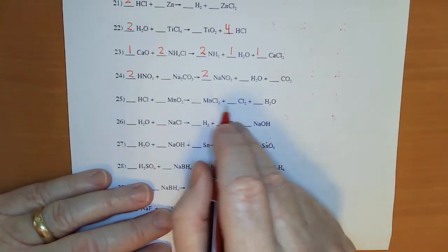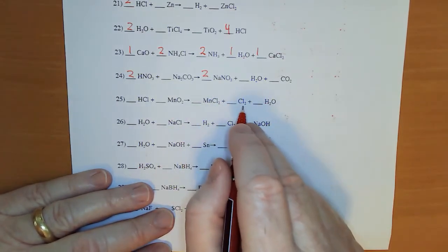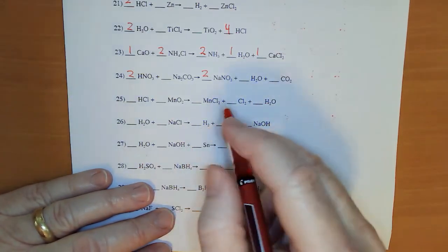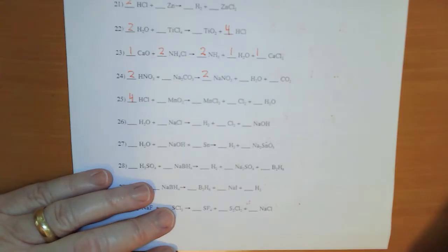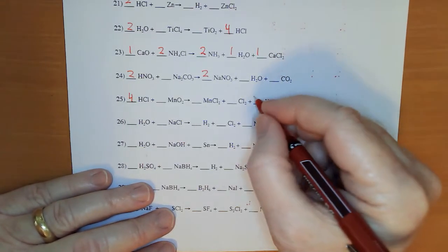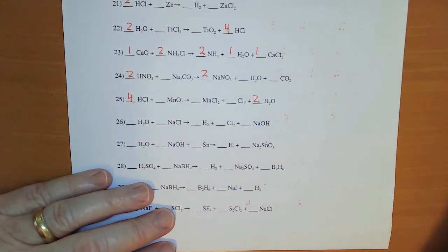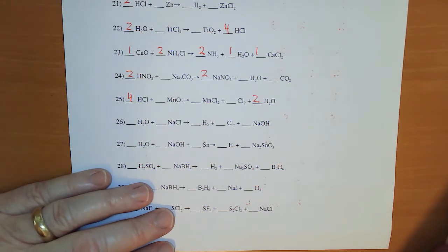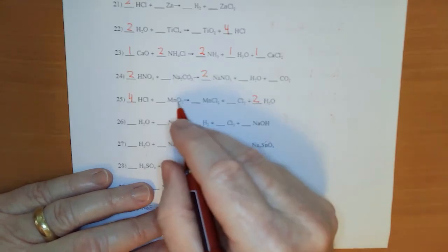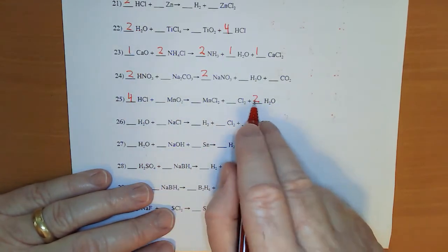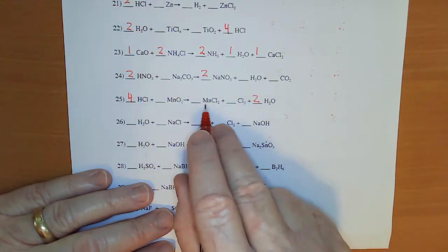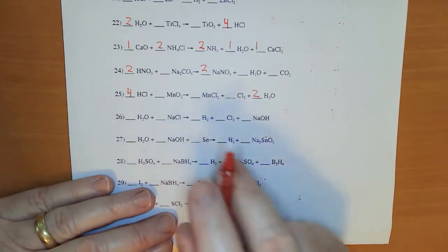Chlorine caught my attention because I've got it in 2 places — 2 of them and 2 of them, so that's 4. I'm going to put a 4 there on my HCl. That means I'm going to need a 2 on my water for the hydrogens to balance. 2 oxygen, 2 oxygen, 4 hydrogen, 2 times 2 is 4, 1 Mn, 1 Mn. We're good.